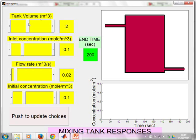And you'll see I've got four sliders for tank volume, inlet concentration, flow rate, and initial concentration.